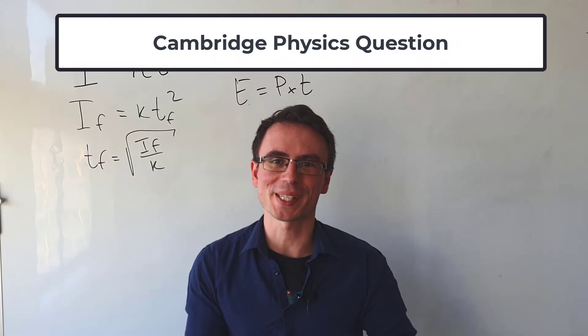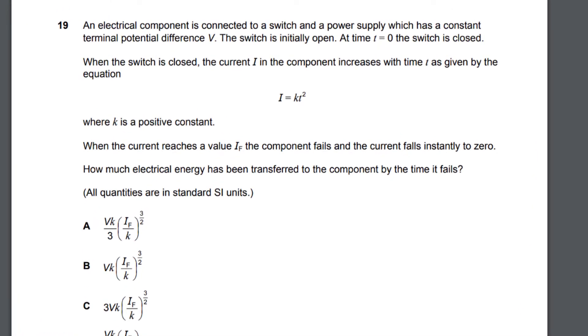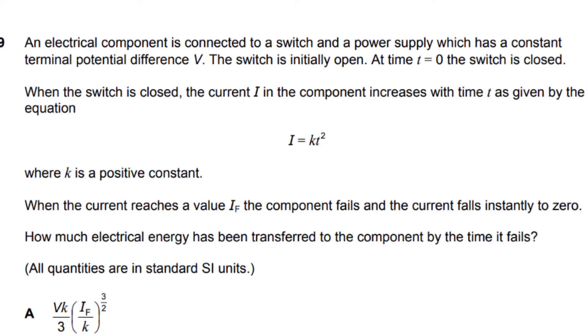Let's solve an important Cambridge physics question. An electrical component is connected to a switch in a power supply and the potential difference is constant. Now at time t equal to zero we close the switch.